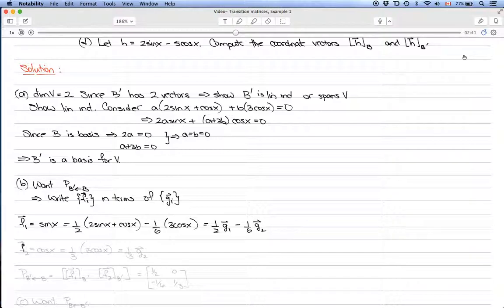And for f_2, which is cos x, this one's easier. This is just equal to 1/3 times 3 cos x, which equals 1/3 g_2.